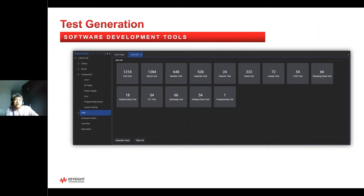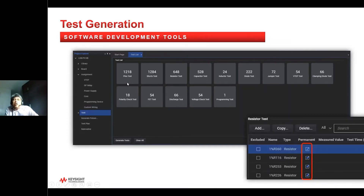Once all devices are defined and board information is included, you will be able to generate tests in a single click. Users can click the clear button to clear previously generated tests and regenerate again, or mark devices as permanent so that when regenerating, the marked permanent devices will not be overwritten. This is useful when a test program has already been debugged but there are changes to some components — instead of restarting from the beginning, it allows quickly updating the test program with a few clicks.